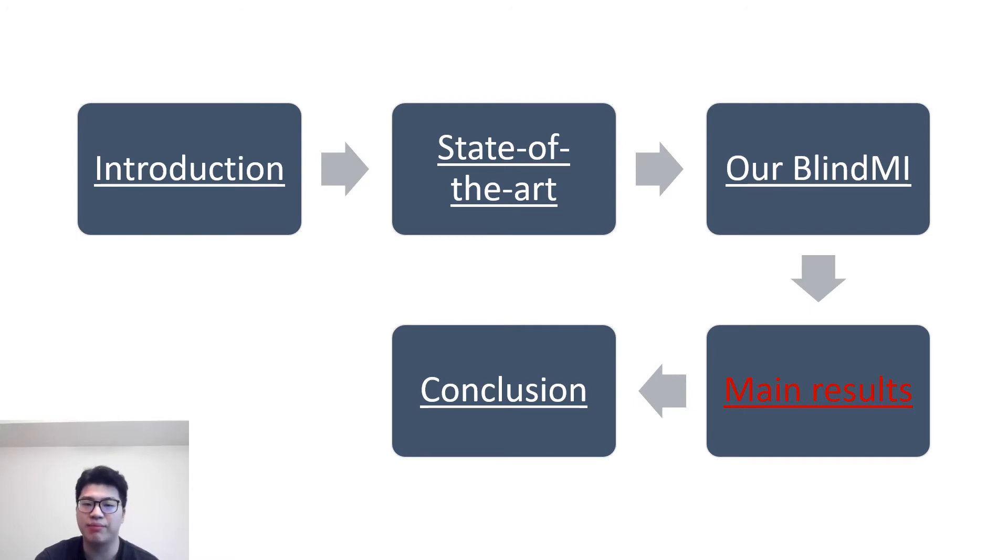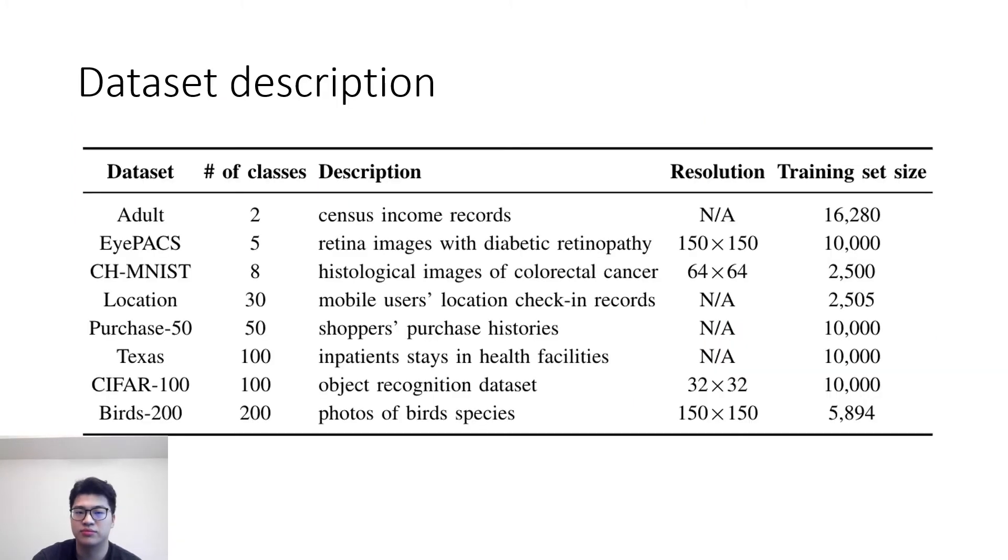Let me show you some interesting experiment results of BlindMI. We use eight datasets to evaluate BlindMI on different application scenarios. For medical records, we have APEX, CH-MNIST, and Texas. For personal information, we have Adult, Location, and Purchase 50. We also evaluate the benchmark sets like CIFAR-100 and BIRD-200.